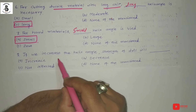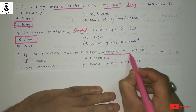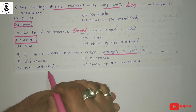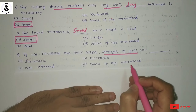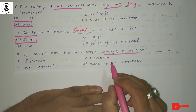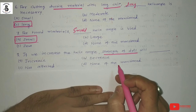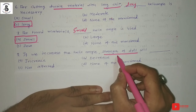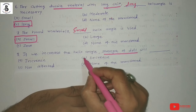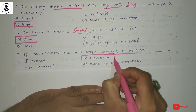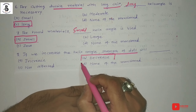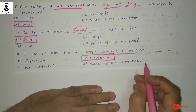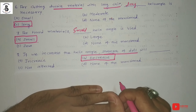Question eight: If we increase the helix angle, the strength of the drill will be — Option A increase. Option B decreases. Option C not affected. Option D none of the above. The relationship between helix angle and strength of the drill is inversely proportional. So if you increase the helix angle, the strength of the drill decreases. Option B is the answer. If you want to increase strength, you have to decrease the helix angle.